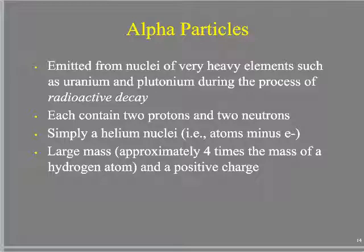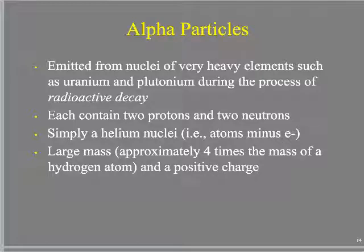Alpha particles are emitted from the nuclei of super-heavy elements like uranium and plutonium during radioactive decay. These elements are so large they can basically peel off an additional particle — in this instance, essentially a helium nucleus. It has two protons and two neutrons with no electrons attached — just the nucleus of a helium atom. It has tremendous mass, roughly four times the mass of a hydrogen atom, a net positive charge of two, and it travels at a very fast speed.